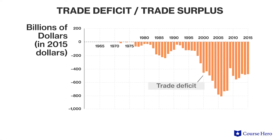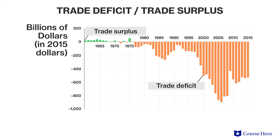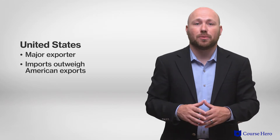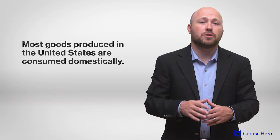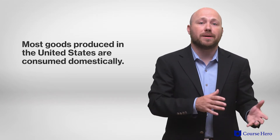Trade deficits and surpluses are an important indicator of a country's economic health, and they are components of vital measures such as GDP. Whether a trade surplus or deficit is viewed positively or negatively depends greatly on the general situation of the country concerned. The United States is a major exporter on the world market, but imports outweigh American exports. The US runs a trade deficit; however, the extent to which this impacts GDP is limited because most goods produced in the United States are consumed domestically.